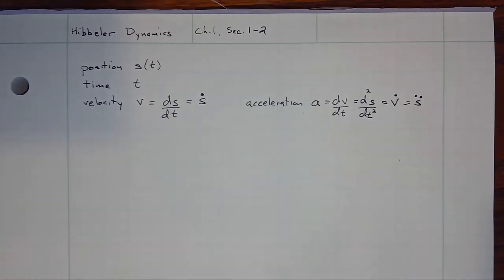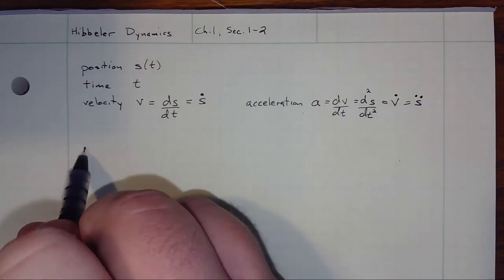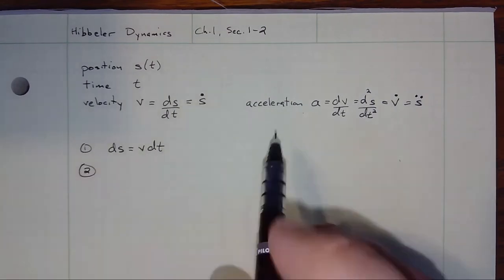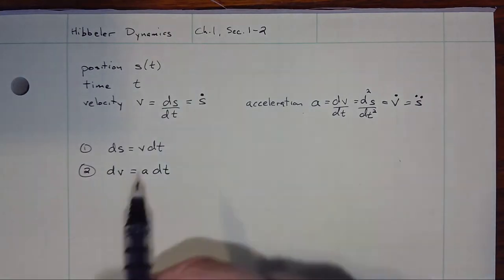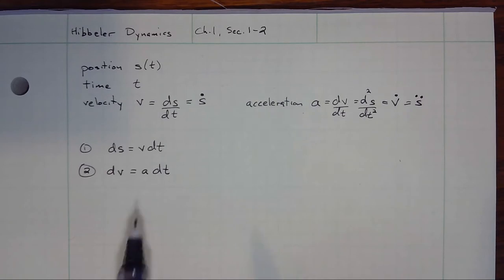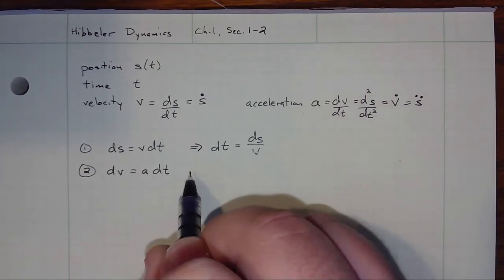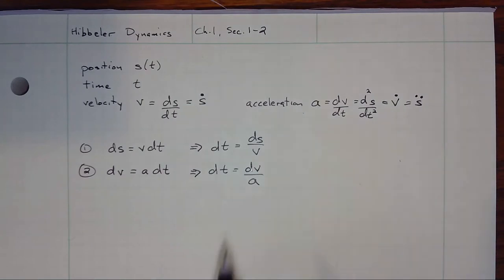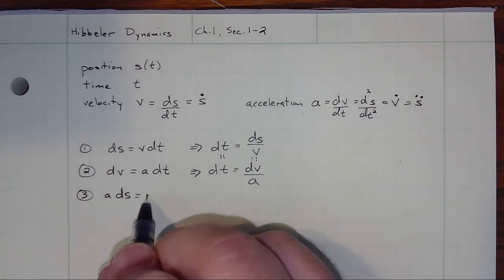To get these in a more useful form, we'll often break these into differential forms, where we take from our definition of velocity that ds is equal to v times dt. From our definition of the acceleration, dv is equal to a times dt. We're free to use algebra to rearrange: dt is equal to ds divided by v, and dt is equal to dv divided by a. Since dt equals itself, I can eliminate time entirely and write a third differential expression: a times ds is equal to v times dv.